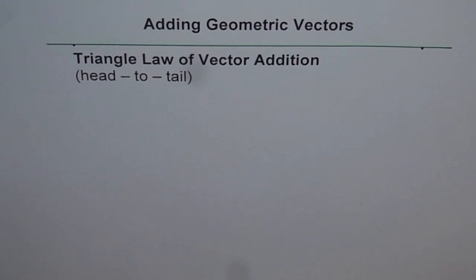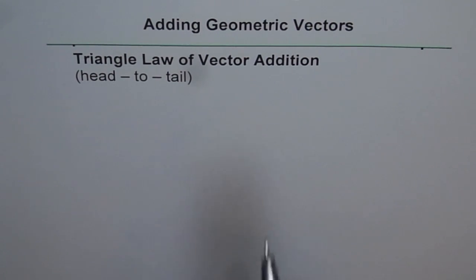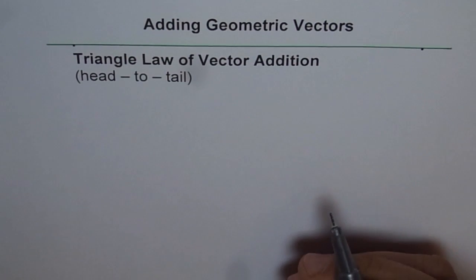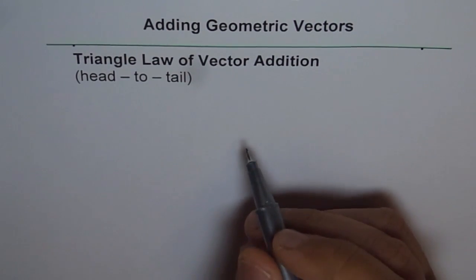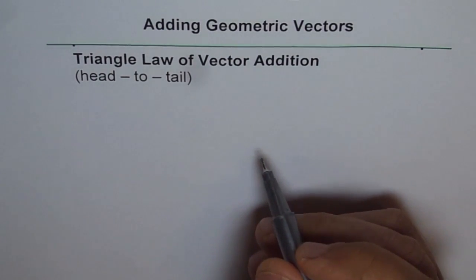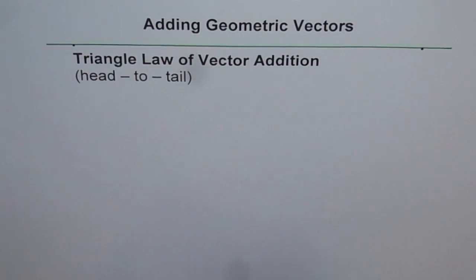Let's try to understand the triangle law of vector addition. We apply this triangle law for geometric vectors. As you know, geometric vectors are arrowheads with a tail and a head — that is, an initial point and a terminal point. Let me show you how we do it.